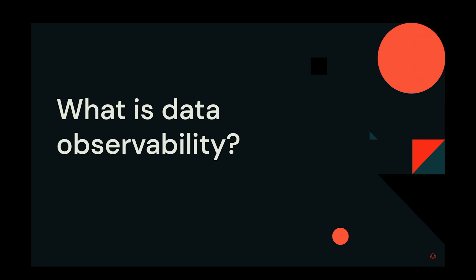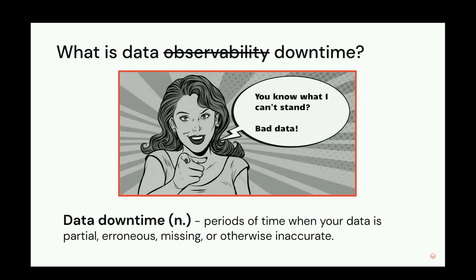What is actually data observability? Let's start by defining a different term which we call data downtime, which refers to periods of time where data is partial, wrong, missing, or inaccurate in any way. And really what that means is you can't trust your data. I want a quick show of hands — who can relate to actually experiencing a data downtime incident?